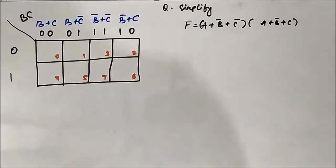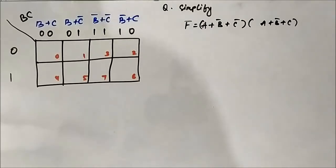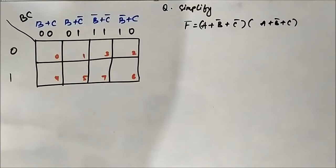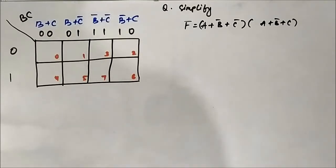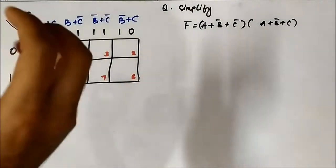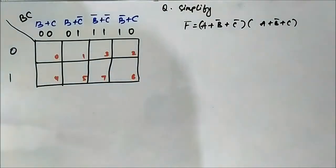Hello friends. So we have discussed about 2 variable, 3 variable, and 4 variable POS KMAPs. Now we will directly go on to the simplification of POS Boolean expressions — Boolean expressions in product of sums form using POS KMAP simplification. The grouping and group formation techniques are the same in SOP and POS, which I have already discussed in SOP: how to form groups, what are the things to be taken care of. The only difference in SOP and POS is the assignment of values and how to represent the Boolean variables, which we have discussed.